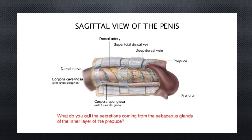This is the sagittal view of the penis. You can see the dorsal veins surrounding the penis, the dorsal artery, superficial dorsal vein, deep dorsal vein, prepuce, frenulum, corpus spongiosum, and the corpora cavernosa. The corpora cavernosa forms the bulk of the penis — essentially all the penile tissue is made up of these erectile tissues.